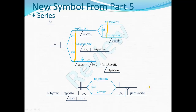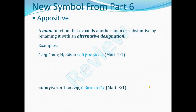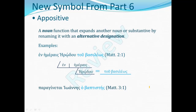A new symbol we had in part six was the appositive symbol. An appositive is a noun function that expands another noun or substantive by renaming it with an alternative designation. So for example, we had the phrase 'in the days of Herod the king,' with 'the king' being the appositive. The prepositional phrase would be diagrammed like this, and the appositive to Herod is set right beside it with an equal sign connecting the two.